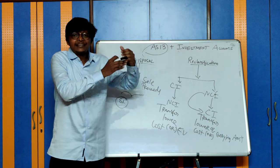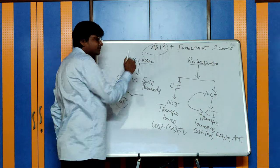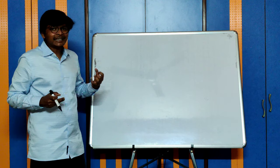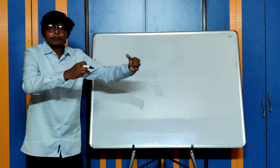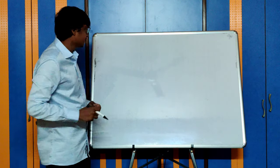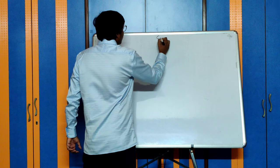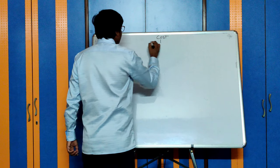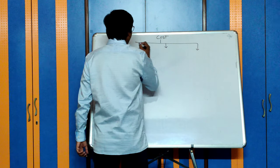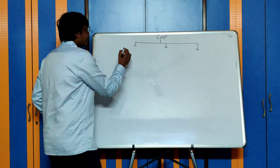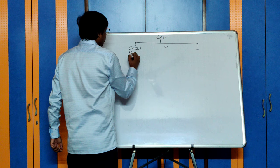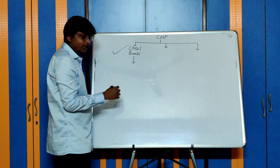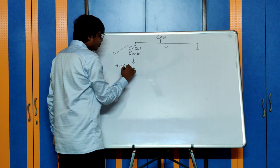Now let us go into the areas where they test us in exams — the sum parts of investment accounts. We have understood the basic concepts of AS-13. Now let us understand in depth how to account for a purchase of an investment and a sale of an investment. When you purchase an investment, what will be the cost price?